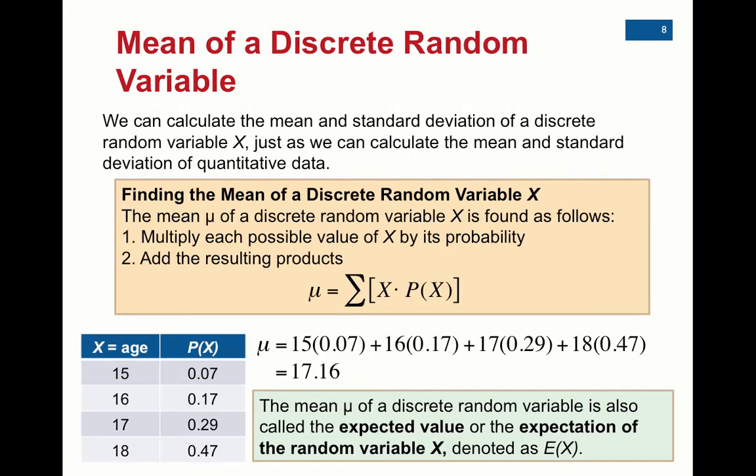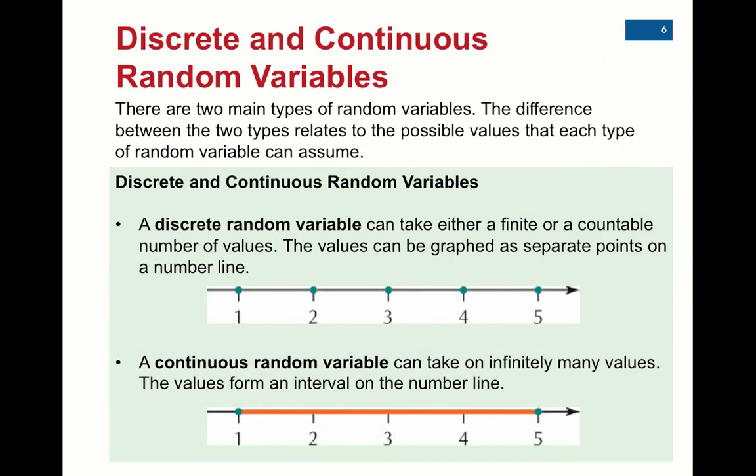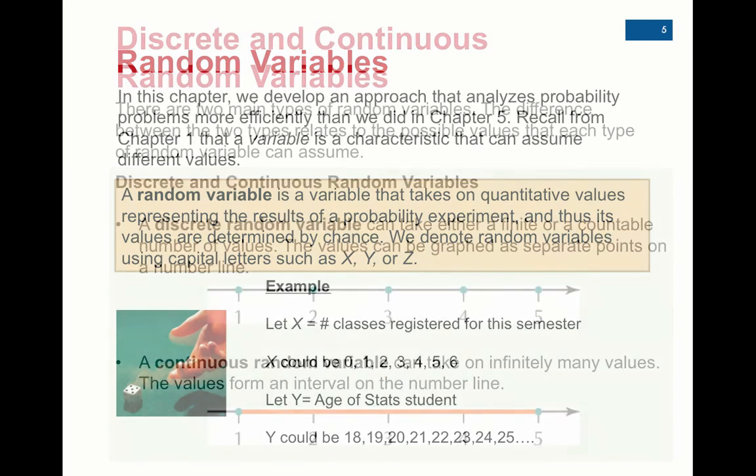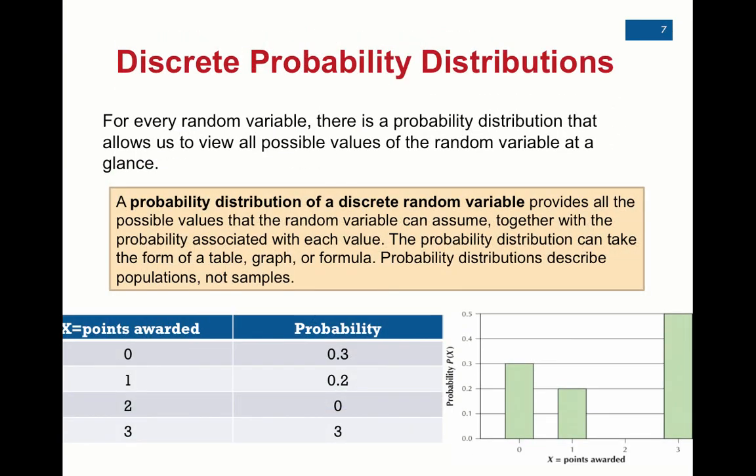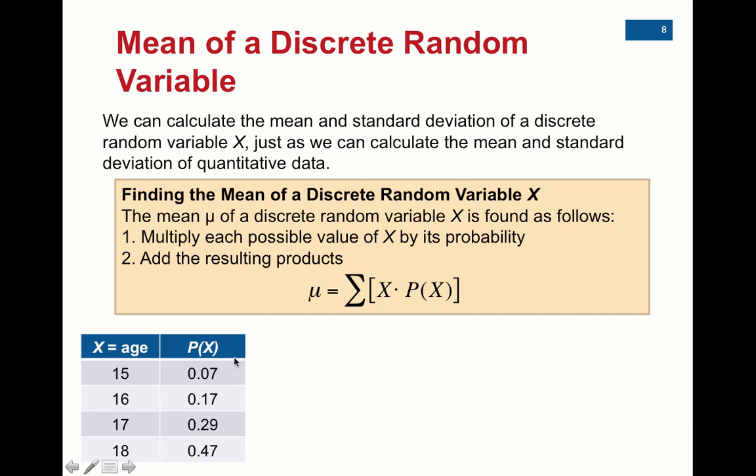But the big thing I want you to remember concept-wise is that remember from outcomes and sample spaces before, we can start creating probability distributions. Probability distributions are really, really important. The big thing that you should remember from Chapter 5 that comes into 6.1 is that the probability of any outcome is between 0 and 1.